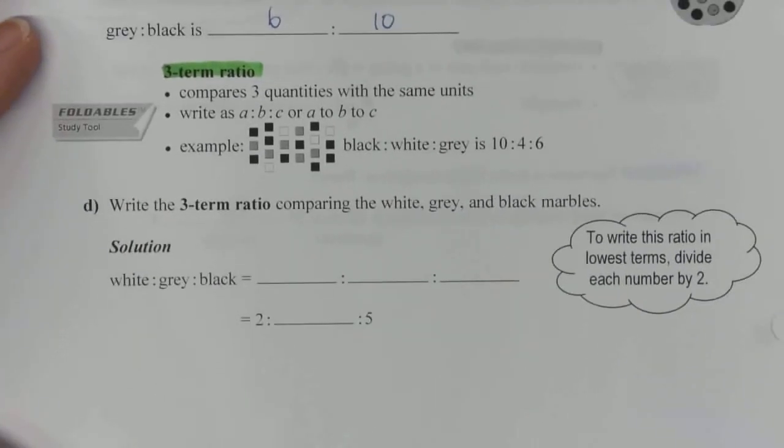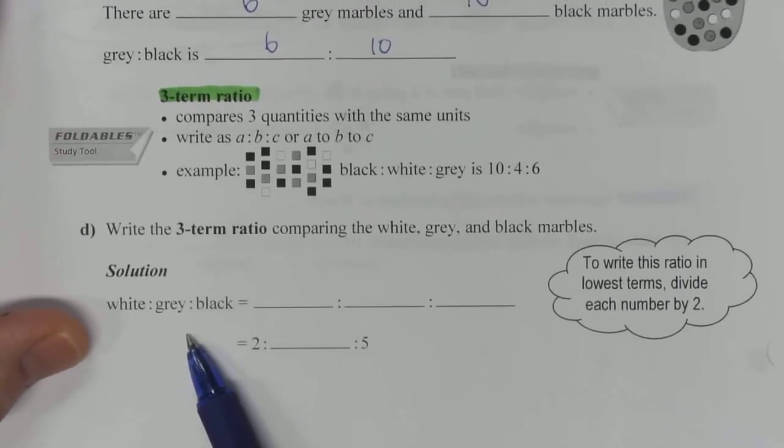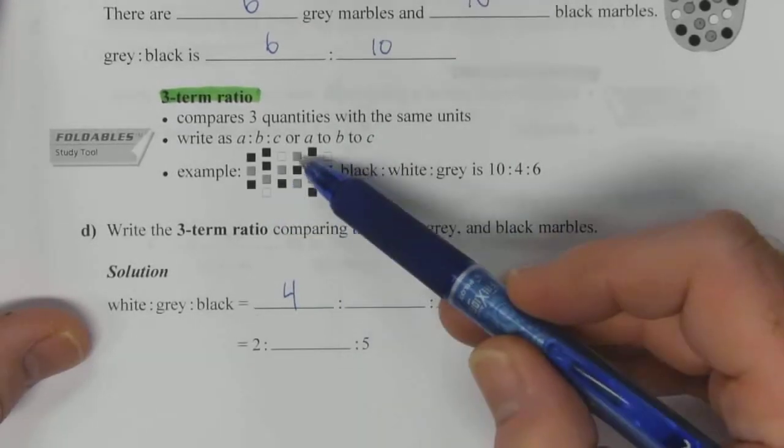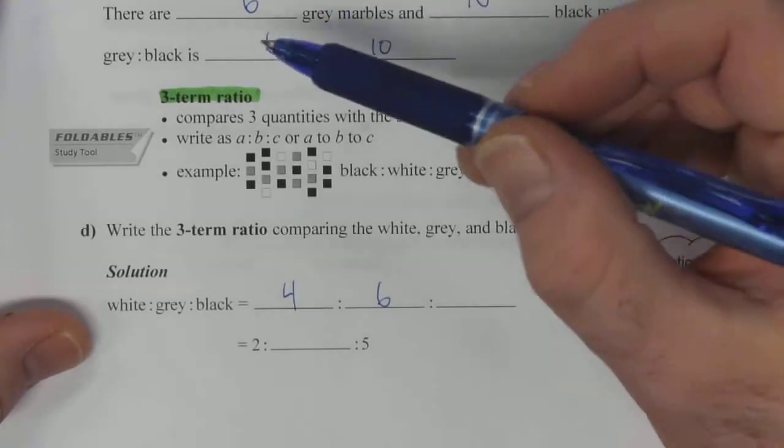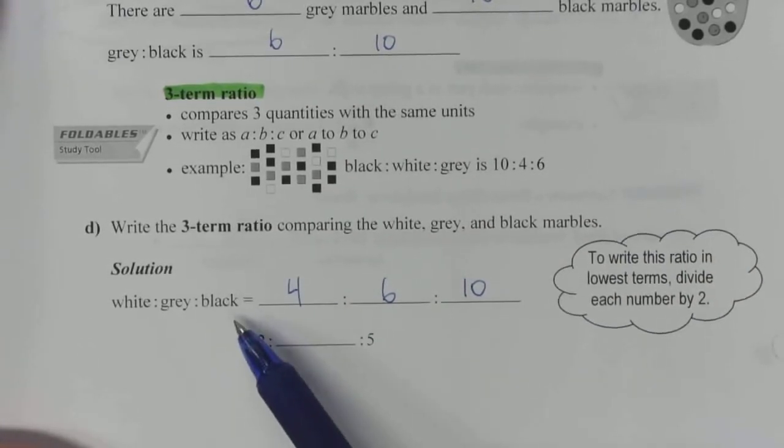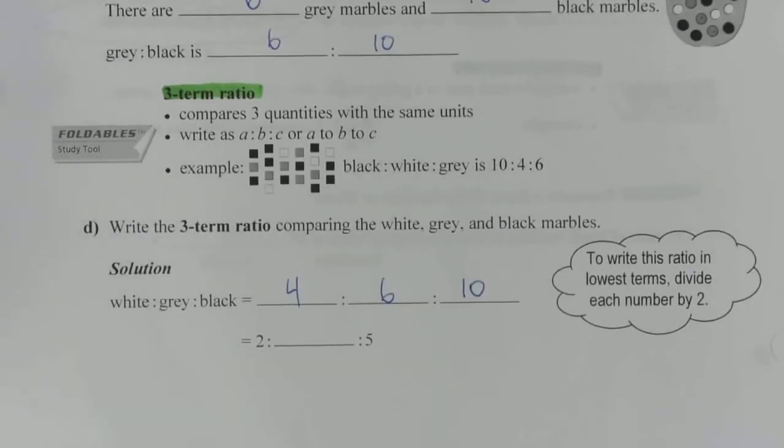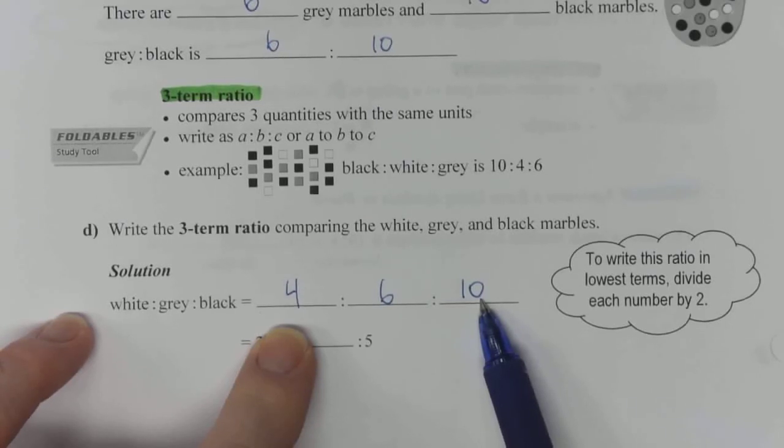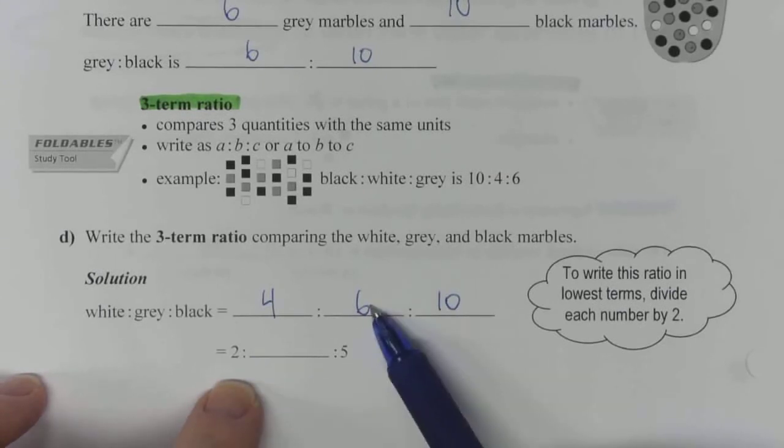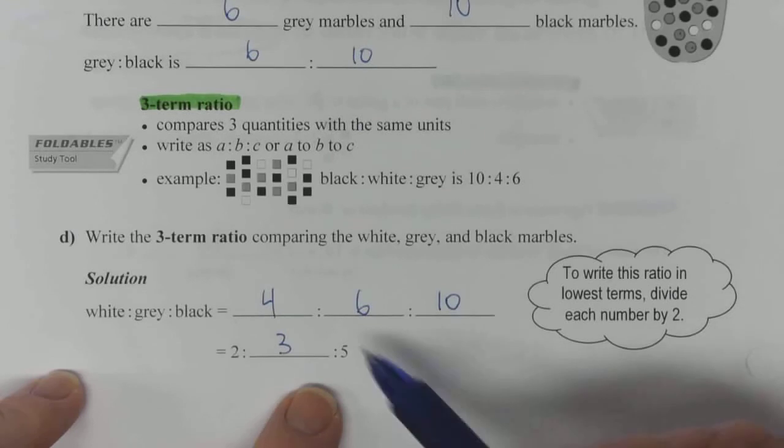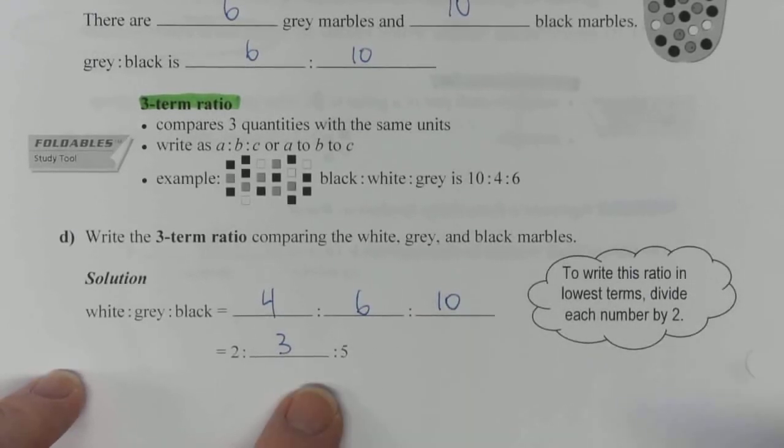Part D. Write the 3 term ratio comparing the white, gray, and black marbles. So, white is 1, 2, 3, 4, gray is 1, 2, 3, 4, 5, 6, and black is 1, 2, 3, 4, 5, 6, 7, 8, 9, 10. So, we've got 4 to 6 to 10 for white to gray to black. That's correct. It's a 3 term part to part to part ratio. But, I recognize that these are all even numbers, which means the factor of 2 can be divided out of each of them. So, 4 divided by 2 is 2. 6 divided by 2 is 3. And 10 divided by 2 is 5. So, by doing that, you reduce it down to lowest terms. So, we now have a ratio of 2 to 3 to 5 for lowest terms.